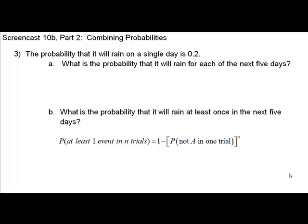Then we're going to look at the probability that it will rain at least once in the next five days, which involves a formula that you can see on the screen now. But let's go back to Part A to begin with, and look at finding the probability that it will rain for each of the next five days. Because we're combining individual probabilities of it raining each day for five days, the operation we're going to use is multiplication.